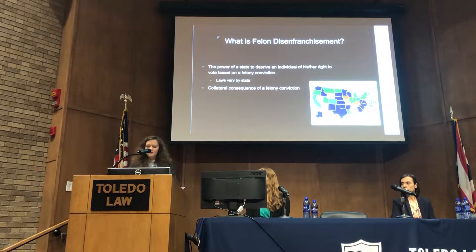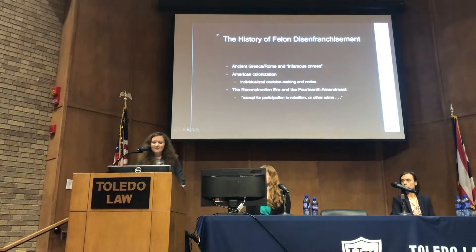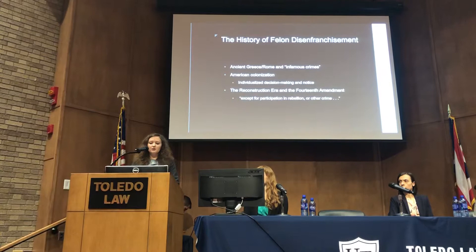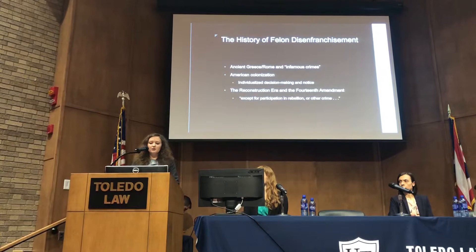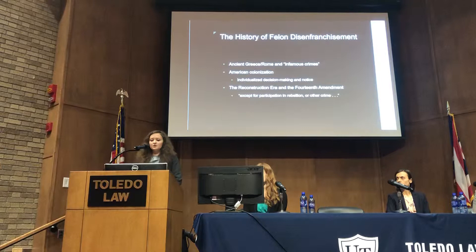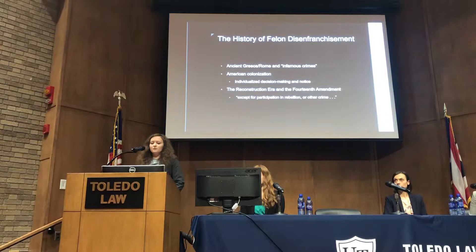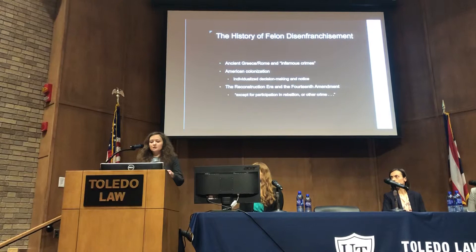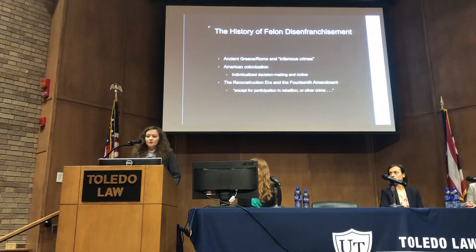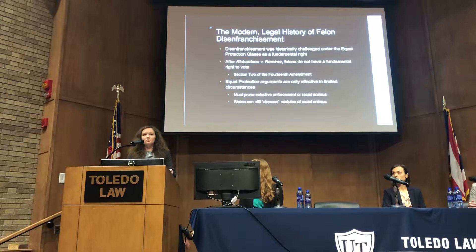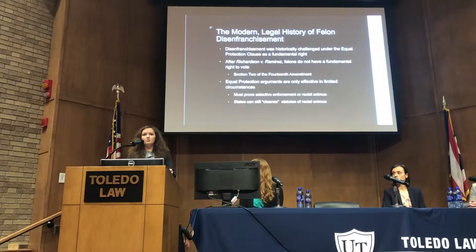Felon disenfranchisement statutes were first found in Greece and Rome and were known as civil death statutes, which allowed a person who had committed a crime to not be able to vote or to participate in the colony's governance. This eventually expanded throughout Europe and to the American colonies, and then was revitalized during the Reconstruction era with the passage of the 15th and 14th Amendments. The 14th Amendment conditioned disenfranchisement laws on a person's participation in rebellion or other crime, which eventually led to the expansion of criminal laws and the incarceration and disenfranchisement of recently emancipated African Americans.